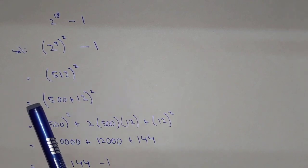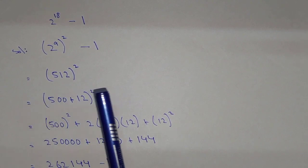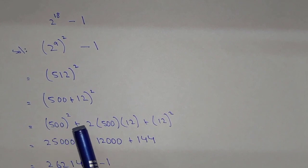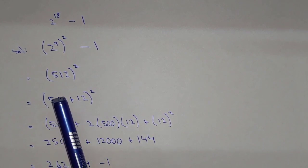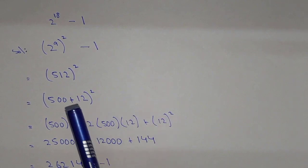(a + b)^2 = a^2 + 2ab + b^2. So 500^2 + 2(500)(12) + 12^2.